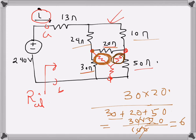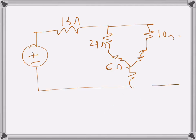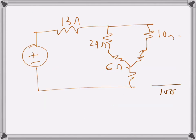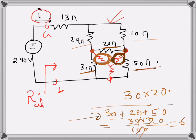— the denominator will again be 100, the sum of the three delta resistances: 30 + 50 + 20. On the numerator, I'm talking about this resistance, so the two resistances connected to this node are 20 and 50. That gives 20 × 50 = 1000 over 100, which is 10 ohms.